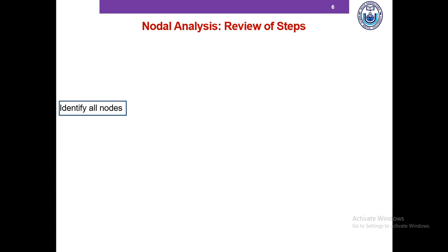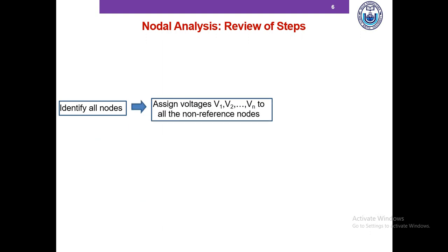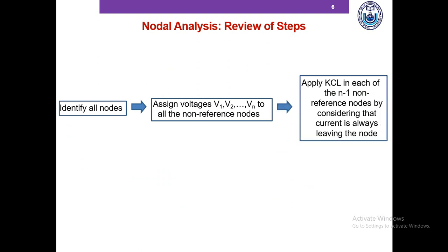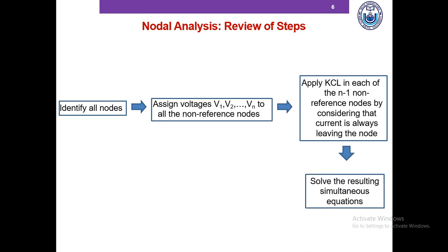Let's review the steps. Step one: identify all nodes and select one as the reference node. Step two: assign voltages V1, V2, V3 up to V(N-1) to all non-reference nodes. Step three: write KCL for each non-reference node — one KCL per non-reference node, always considering current as leaving the node. Step four: solve the resulting system of linear equations in a calculator.